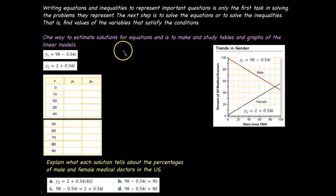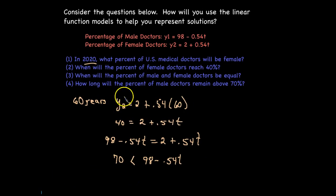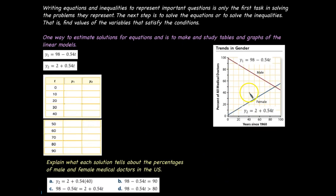Writing equations and inequalities to represent important questions is really only the first task in solving the problems. Our next step would then be to solve those equations or inequalities that we created to represent our questions. In other words, we want to find the values of the variables that satisfy these conditions. That's how I can do it algebraically. But I can also use tables and graphs, as we've done before, to help us estimate or find solutions.